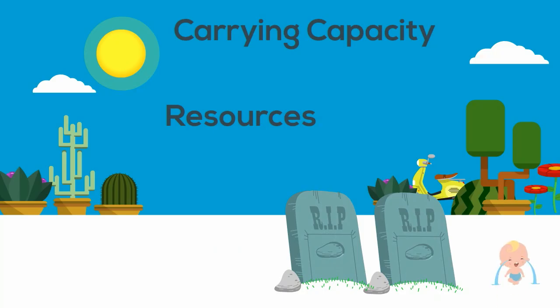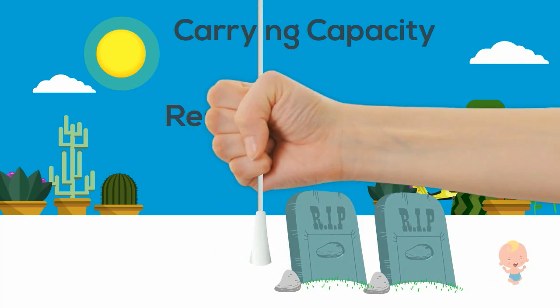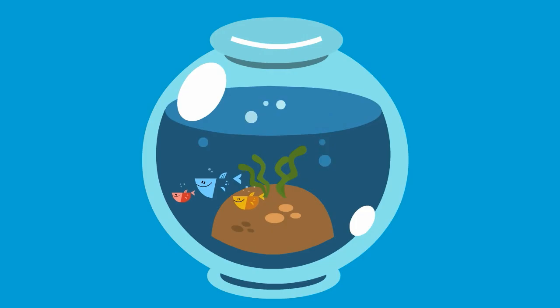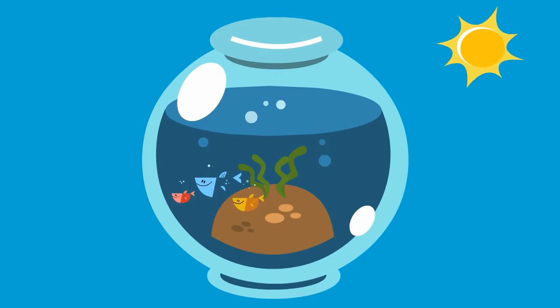Let's take a look at the fish family that live in the fishbowl. Life is plentiful — there is plenty of space, there is food to eat, there is energy from the sun, and they are able to reproduce.